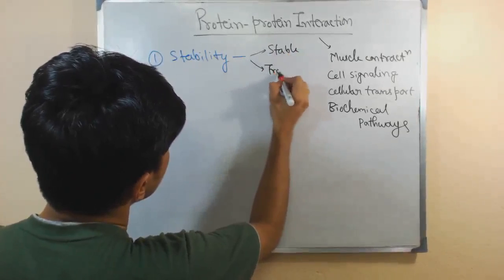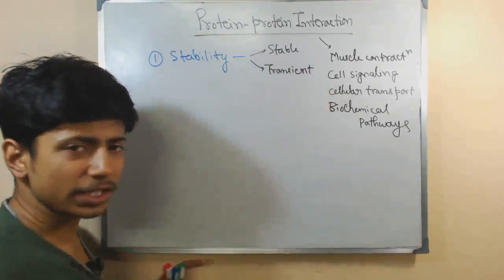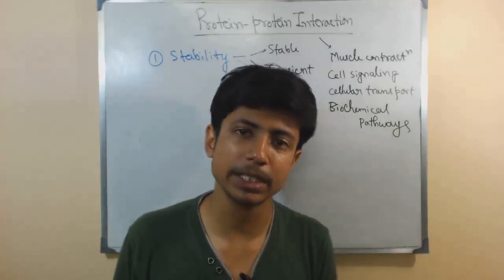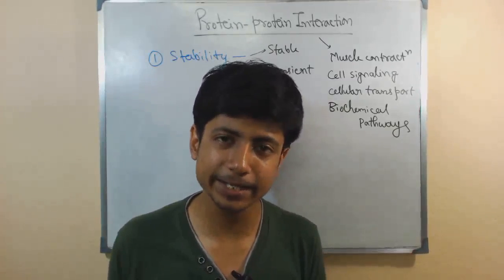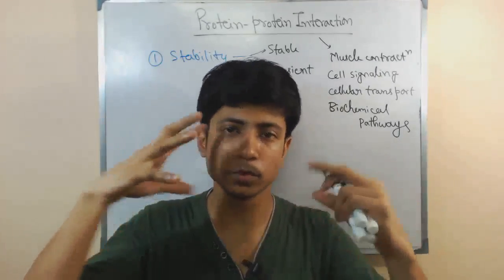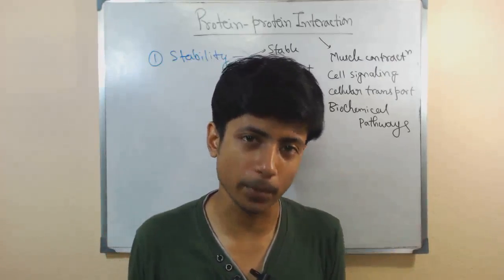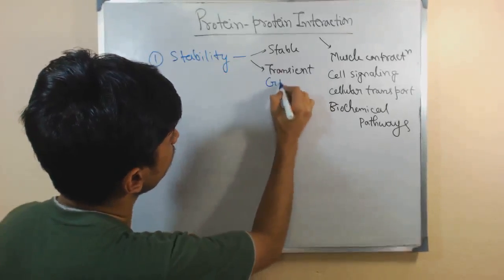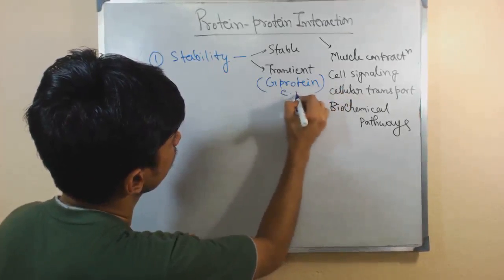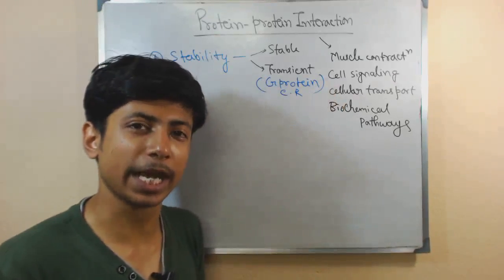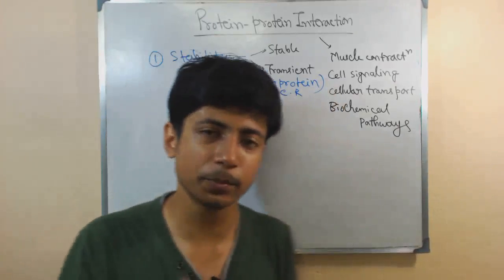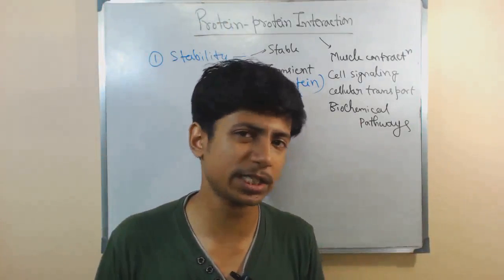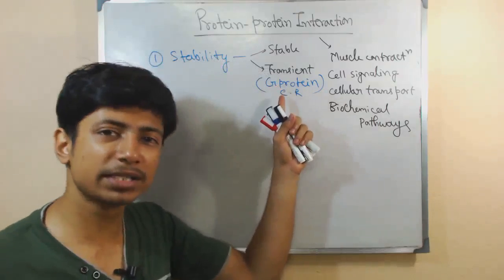Based on stability, protein-protein interaction can be divided into two parts: stable interaction and transient interaction. For stable interaction, most cases involve hormones — they are always active and always present in our body, so their interactions are stable. If those become unstable, we have a serious problem. For transient interaction, a good example is the G-protein coupled receptor (GPCR). In GPCR signaling, the alpha subunit separates from the beta-gamma subunits — that separation is very transient, not stable at all. Many cell signaling molecules belong to this transient type.